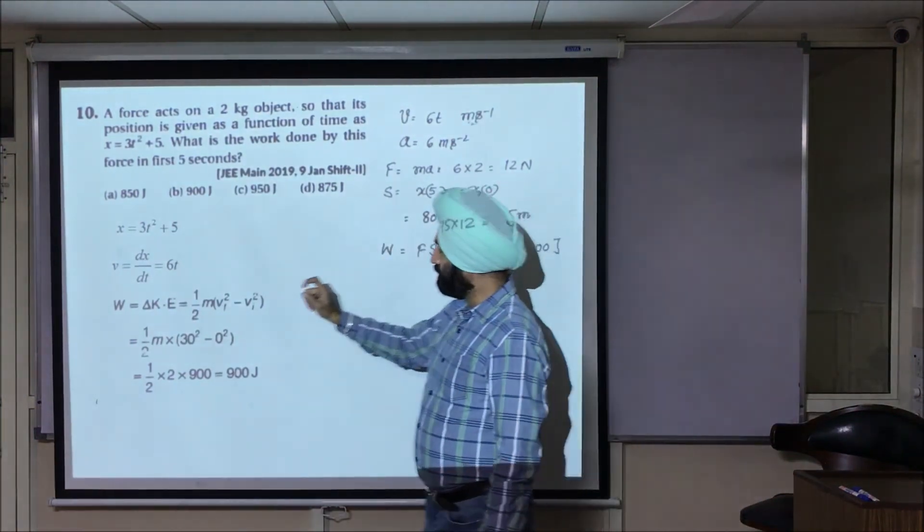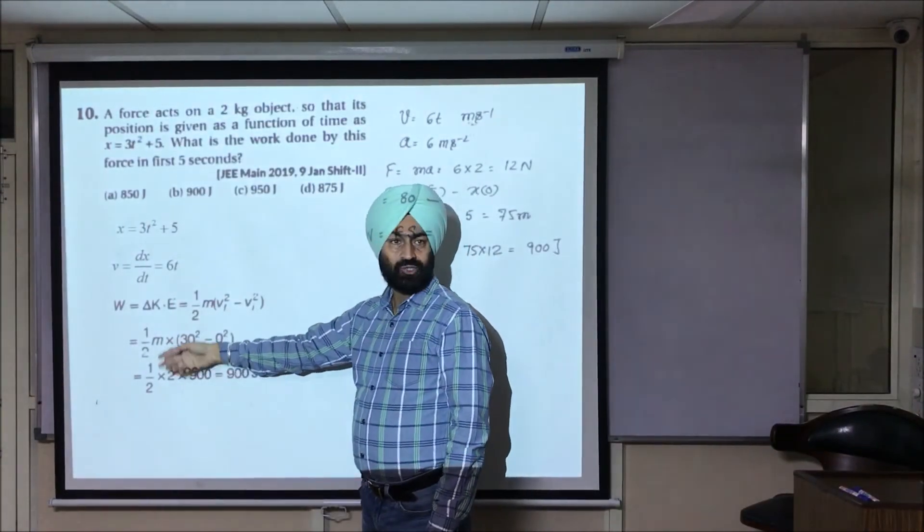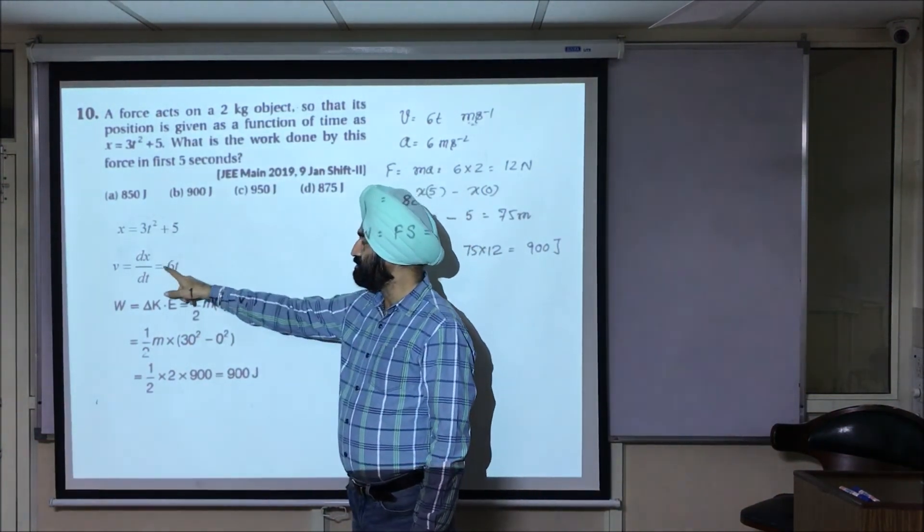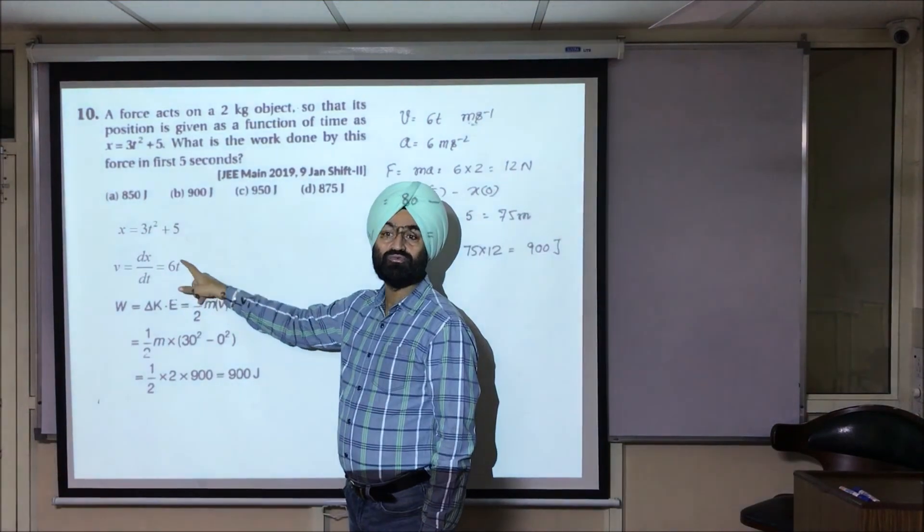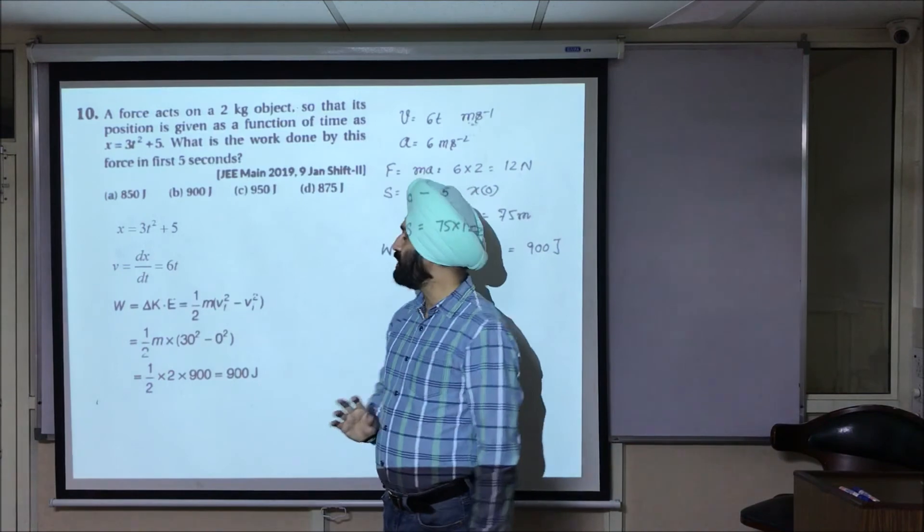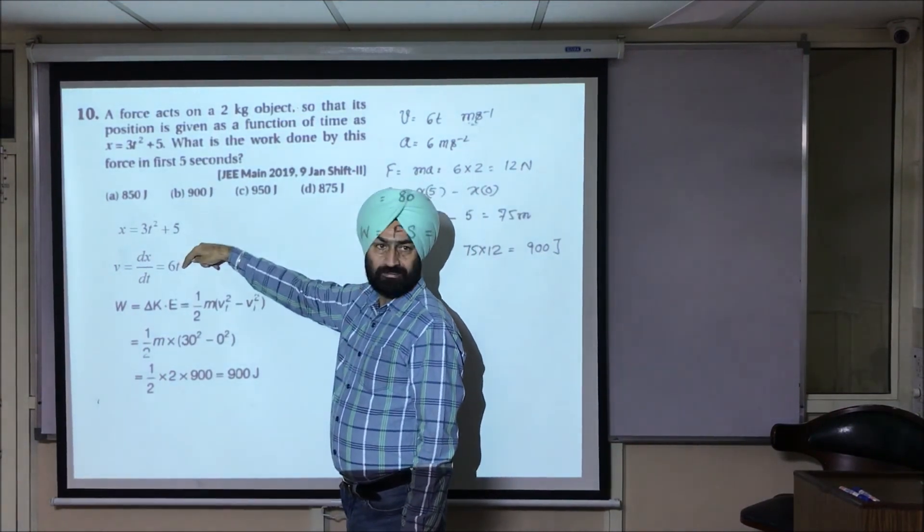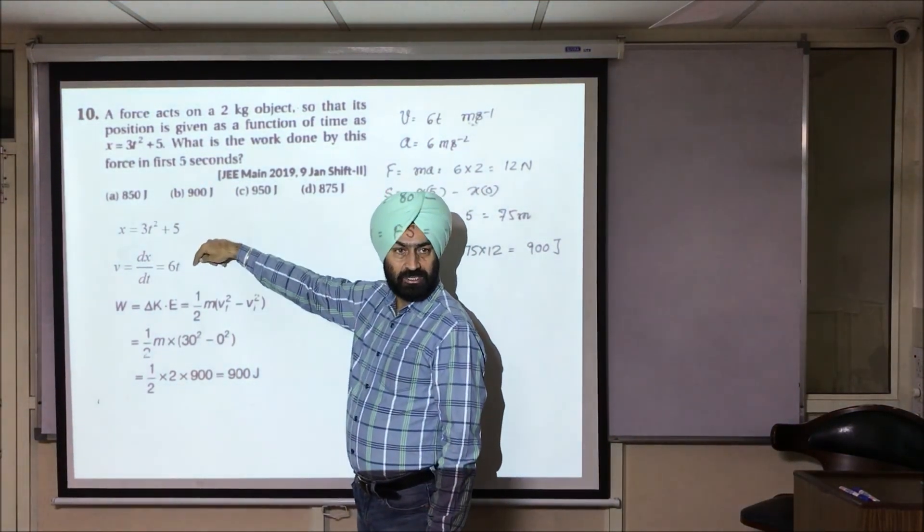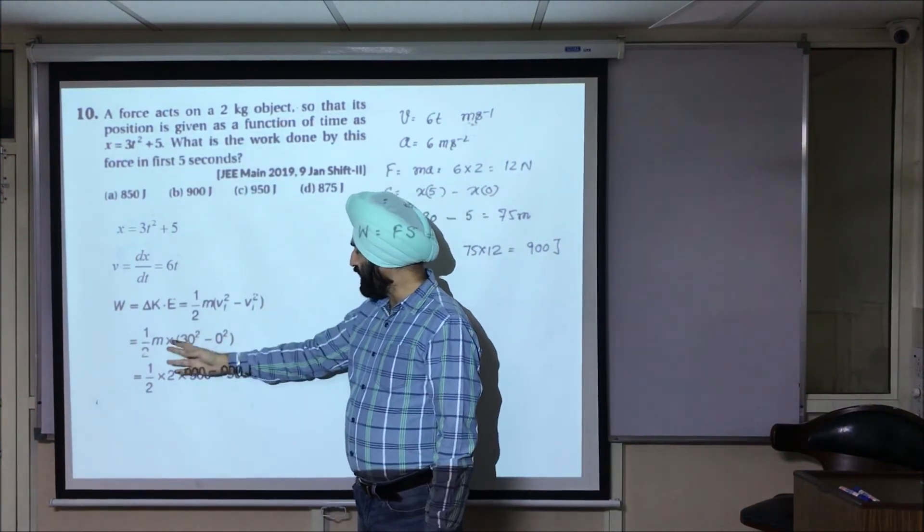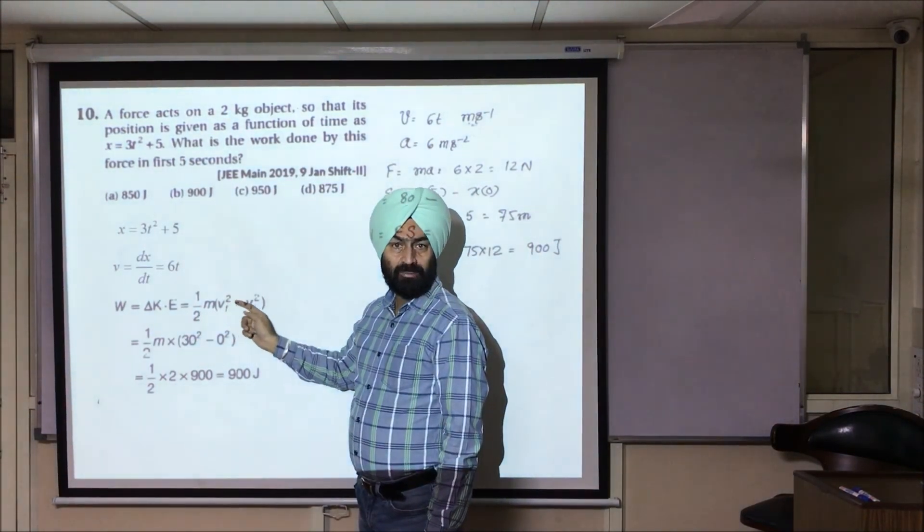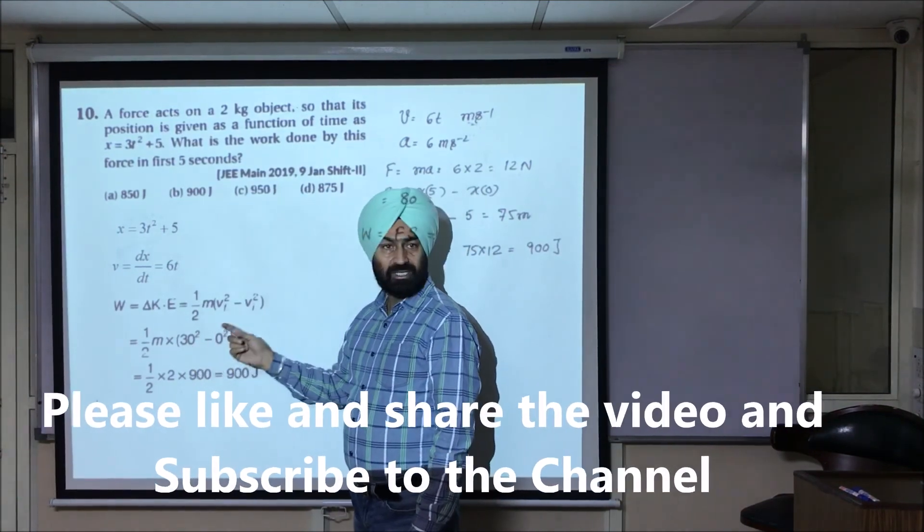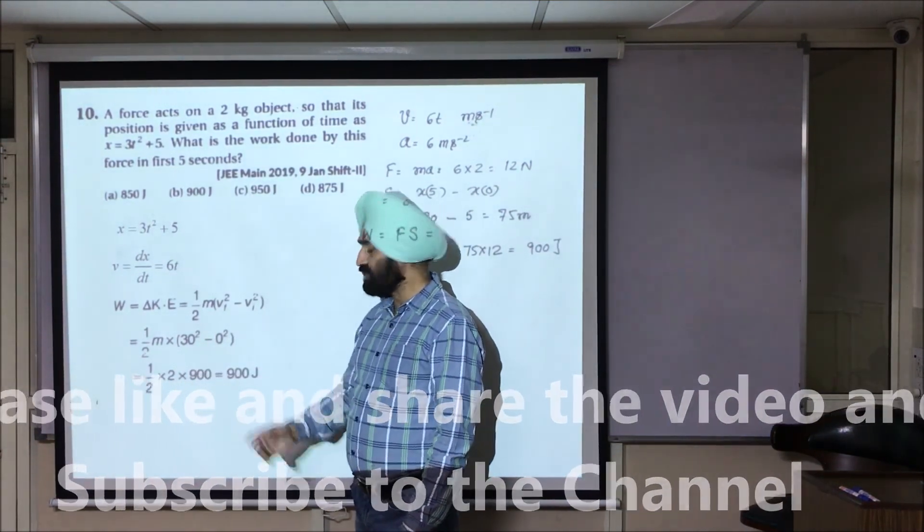Other method, simpler one. Work done equal to change in kinetic energy. Initial velocity was, at t equal to 0 velocity was 0. So there wasn't any kinetic energy at t equal to 0. And at t equal to 5 seconds, velocity is 30. So work done is equal to change in kinetic energy. So half m new velocity square minus half m initial velocity square. Half m common. New velocity is 30, initial velocity was 0. Again you can proceed this way.